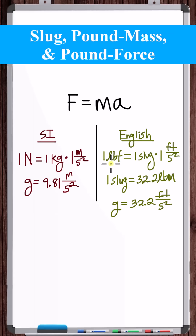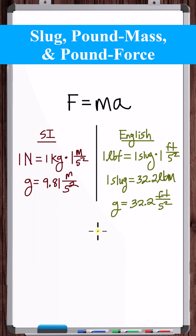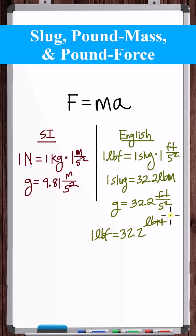Now to get the well-known relation between pounds force and pounds mass, just take the original equation and substitute 1 slug for 32.2 pounds mass. You get 1 pound force is equal to 32.2 pounds mass feet per second squared.